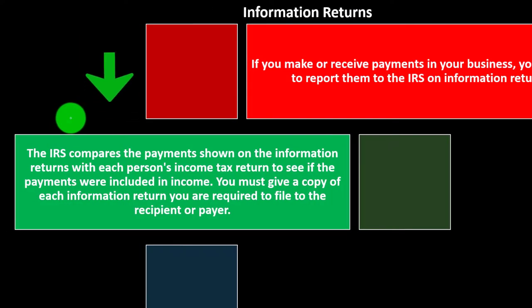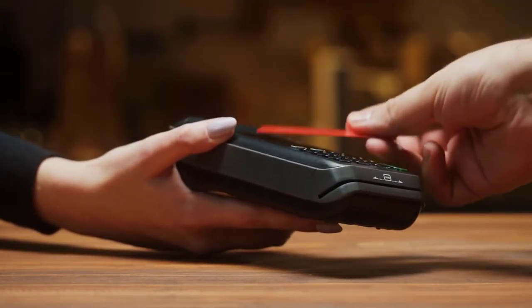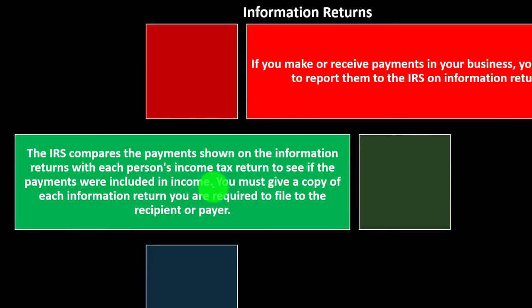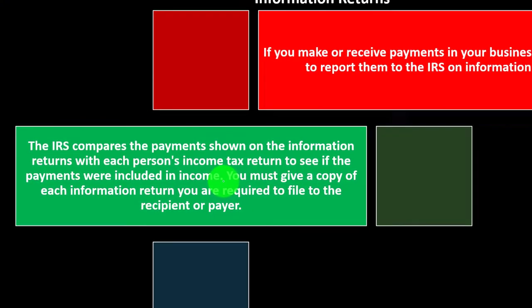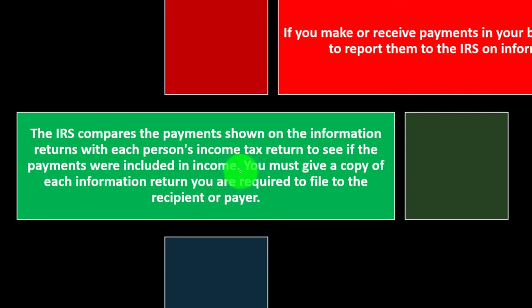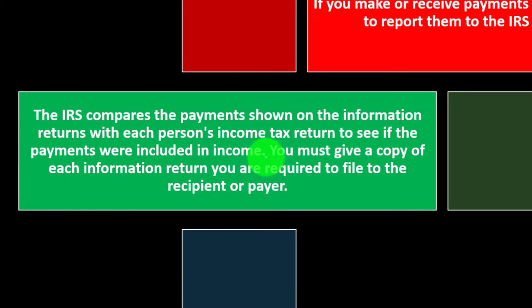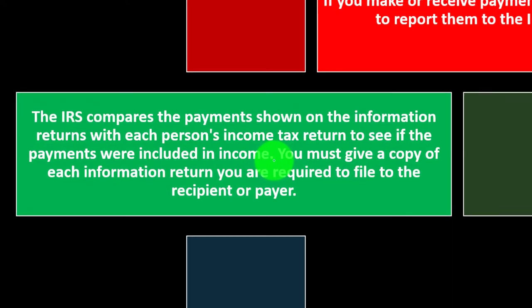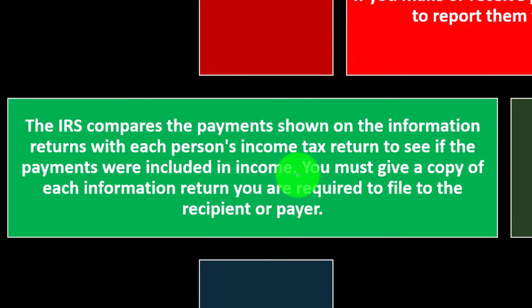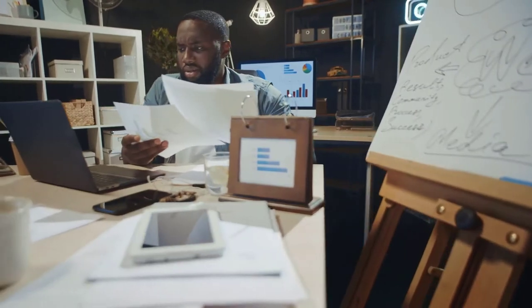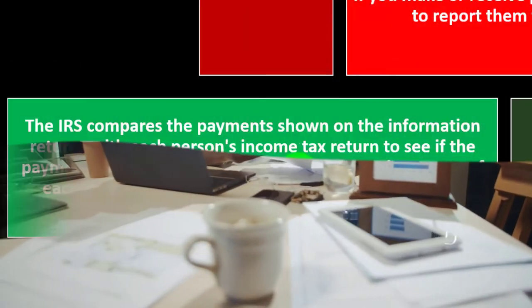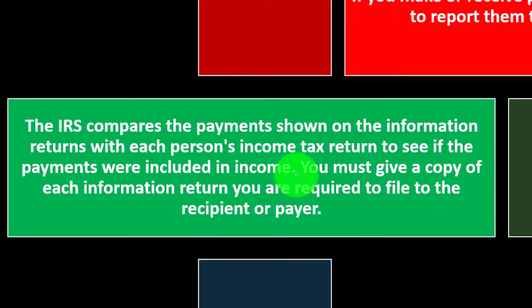The IRS compares the payments showing on the information returns with each person's income tax return to see if the payments were included in income. So if you're giving a transaction to somebody else, for example, you might have to give that somebody else an information return — possibly a 1099 — and you also give it to the IRS, so that the IRS can double-check that the person receiving the payment is reporting their income.